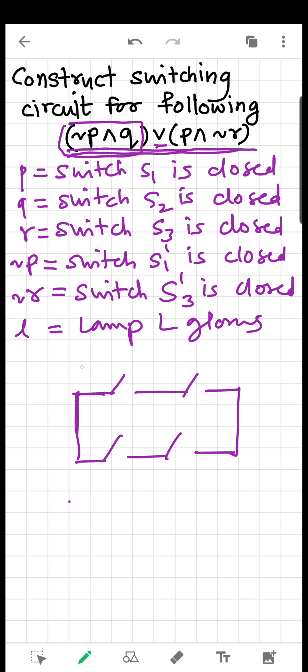So let's say this first line, it is for the first bracket and this is for the second bracket, so we can interchange also that doesn't matter. So now this is NOT P, that means this switch is S1', this switch is S2' that is Q, this switch is S1' that is P and this switch is S3'.